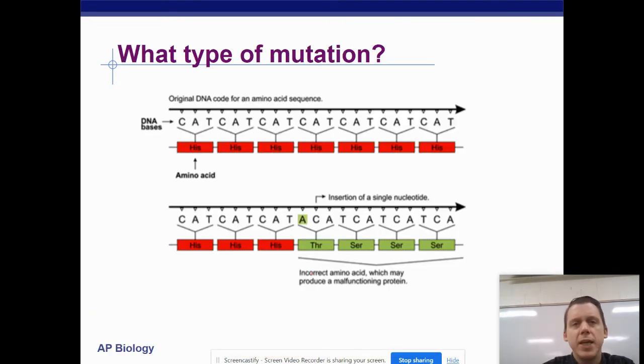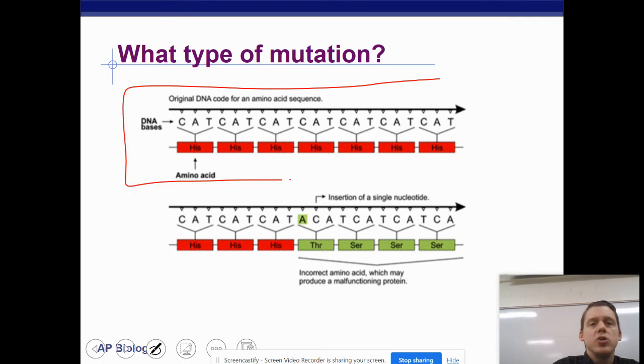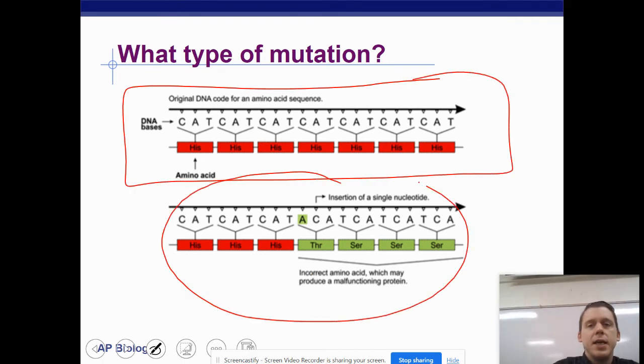So what type of mutation is this? Again, DNA we should have at the top, DNA we end up with at the bottom. So as you can see here, we have inserted an A. So this is an insertion, and it also causes a frameshift. Notice how everything after that point is now different.